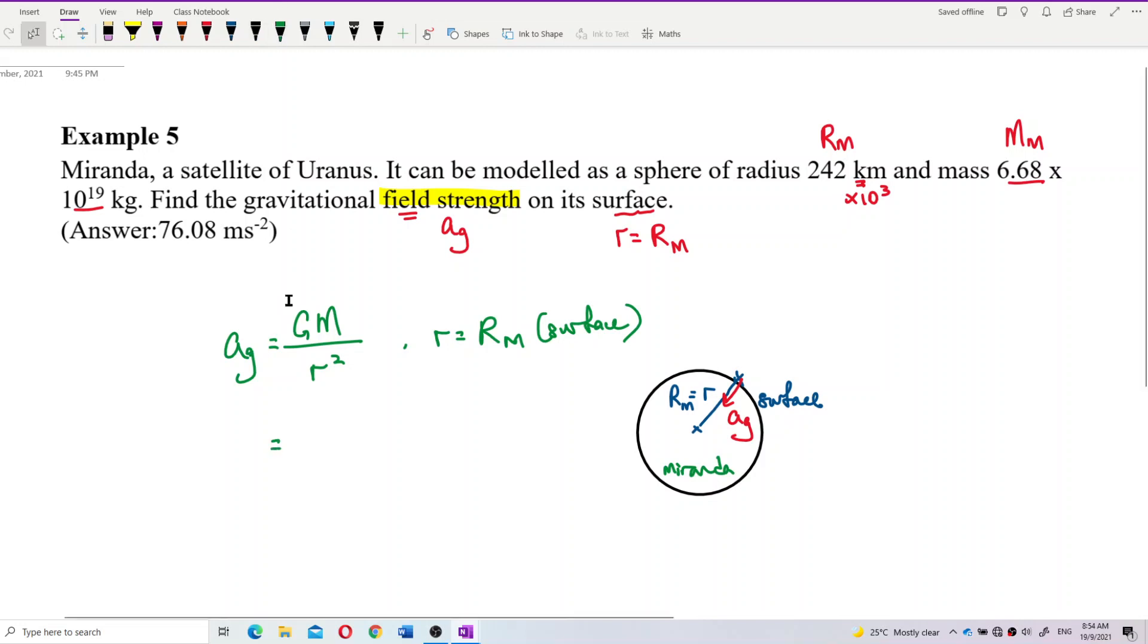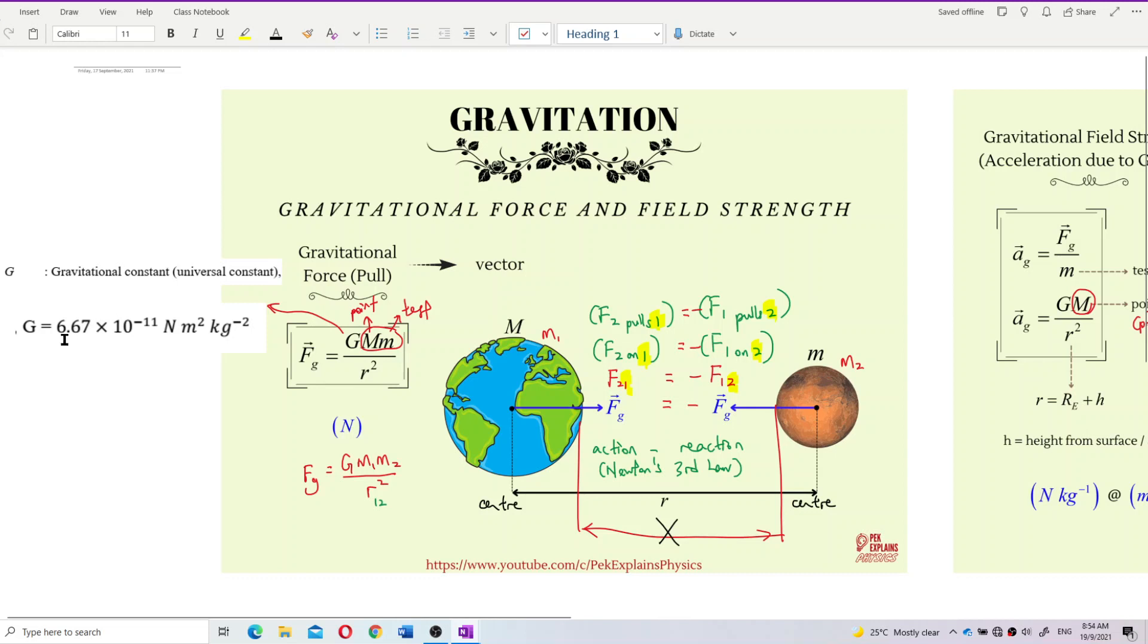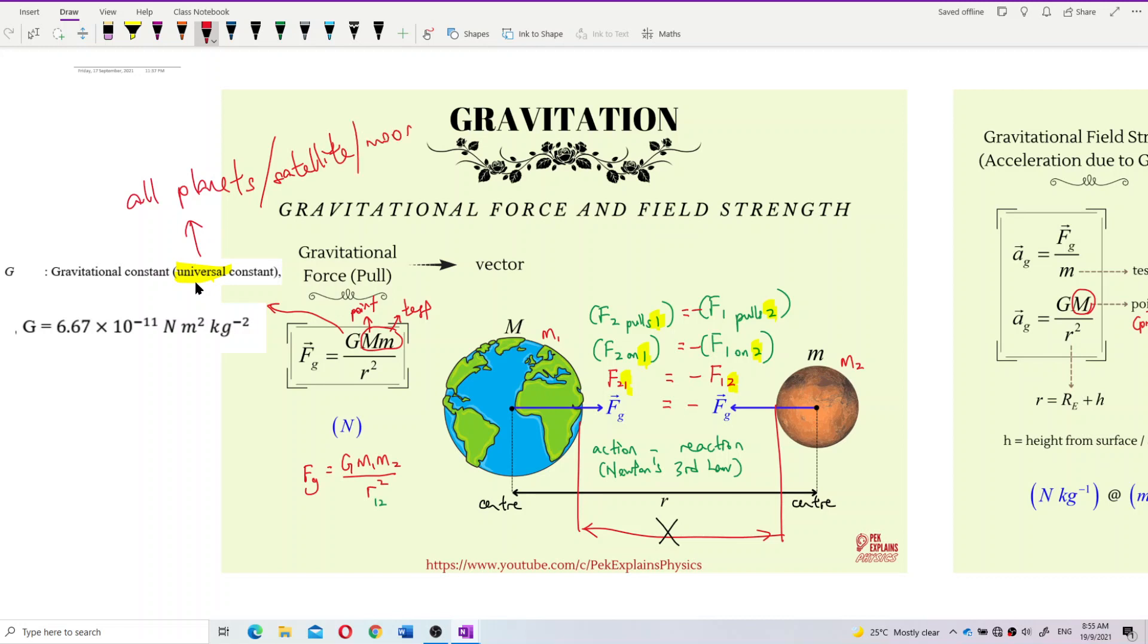So, what is our g value here? Gravitational constant. Do we use back the same value like before, like we used for earth? 6.67 exponent negative 11. Is this only for earth? Is this gravitational constant only for earth? No. This value we can use for any planet because it's called universal. Universal constant. Universal means it's not just applied to the earth. It's applied to any planet. See the word universal constant.